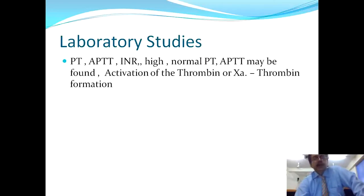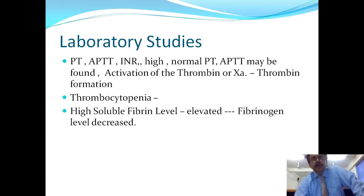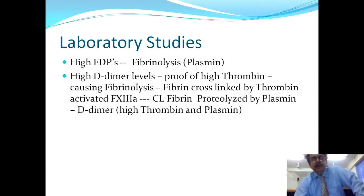For laboratory studies, PT, APTT, and INR are done — they are commonly high. APTT may be elevated due to activation of thrombin or factor 10A. On CBC, thrombocytopenia is found. Soluble fibrin levels may be elevated and fibrinogen levels are decreased. At later stages, FDPs — fibrin degradation products — are found to be very high due to fibrinolysis from plasmin, which breaks down the fibrin clot. Elevated FDPs are one important diagnostic tool for DIC.